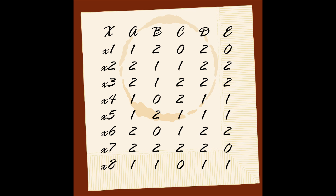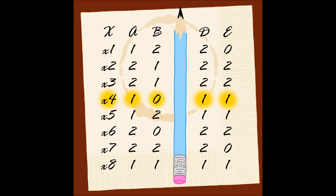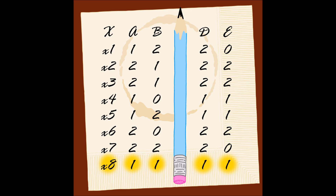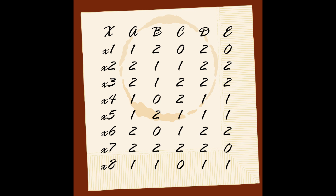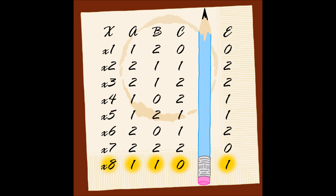We continue by checking attribute C, repeating the process we just did on attributes A and B. Checking X1, then X2 — X2 is identical to X3 with the removal of attribute C, but this does not create indiscernibles because they have the same value for E. Continuing through X4, X5, X6, X7, and X8 — attribute C is not part of the core, as no indiscernible relationships are created when it is removed. Lastly, we check attribute D — attribute D is also not in the core.